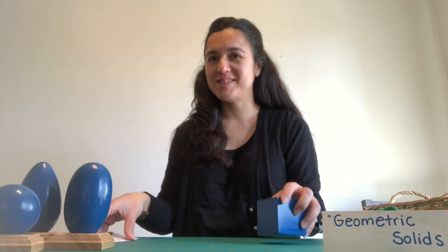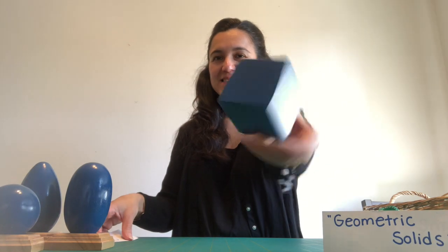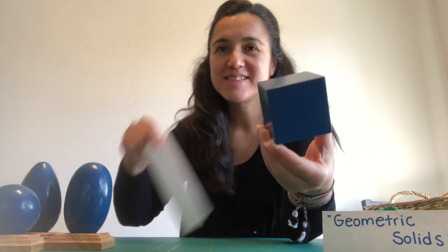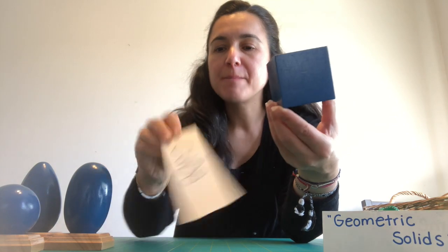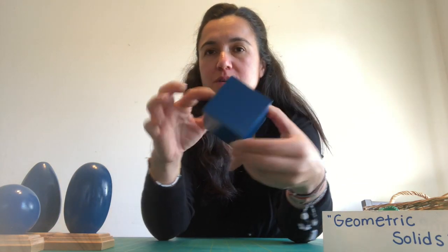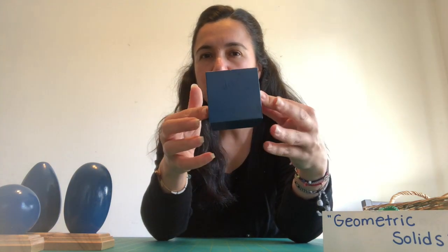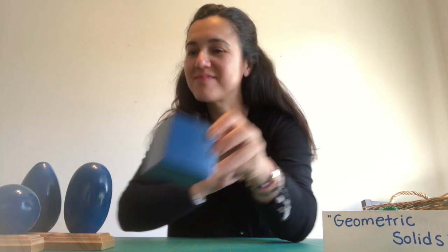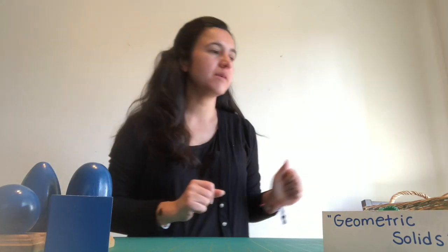I like this one. What do you think it is? That's a cube. The cube has squares all over. Can you guess how many? That's a cube and I'm going to put it right there.